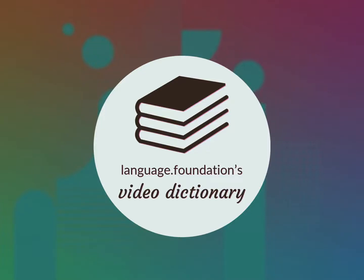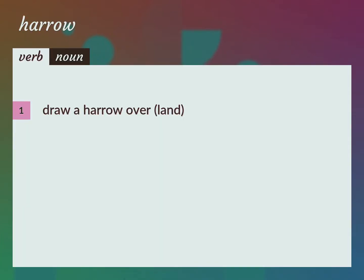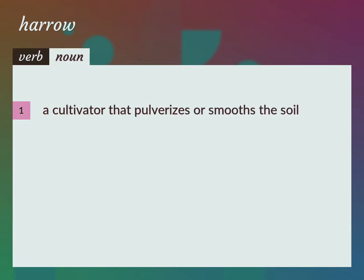Language.Foundation's Video Dictionary, helping you achieve understanding. Draw a harrow over land. Disc. A cultivator that pulverizes or smooths the soil.